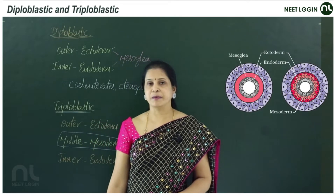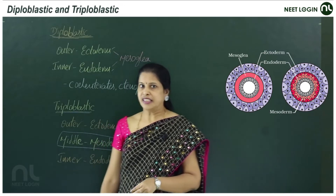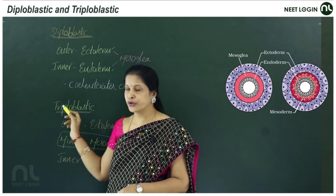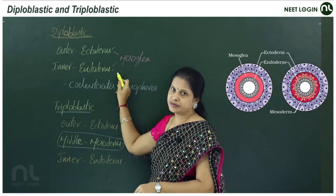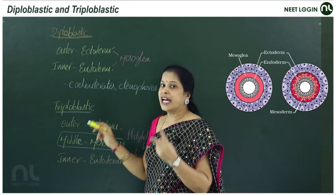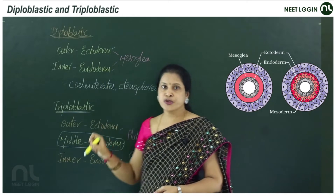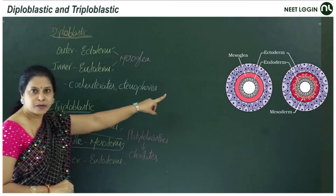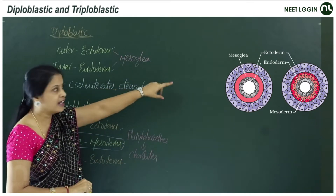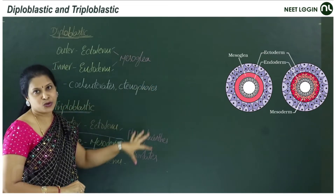In animals during development, the cells are arranged into layers. If they form into two germinal layers — outer ectoderm and inner endoderm — they are called diploblastic animals. They have only two germinal layers. In between the outer ectoderm and inner endoderm, there is an undifferentiated layer called mesoglia.